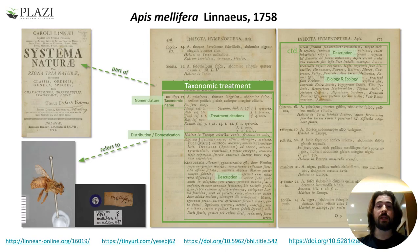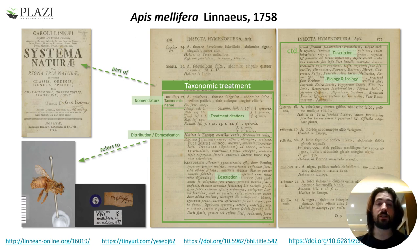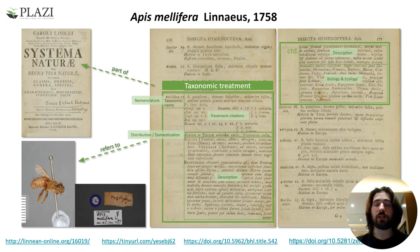To recap, the linking of publications within the PLASI workflow is based on taxonomic treatments. A taxonomic treatment is a section in a scientific publication documenting the features of a related group of organisms or taxa. Treatments have been the building blocks of how data about taxa are provided ever since the beginning of modern taxonomy. Each scientifically described taxon has at least one taxonomic treatment, which is its original description.